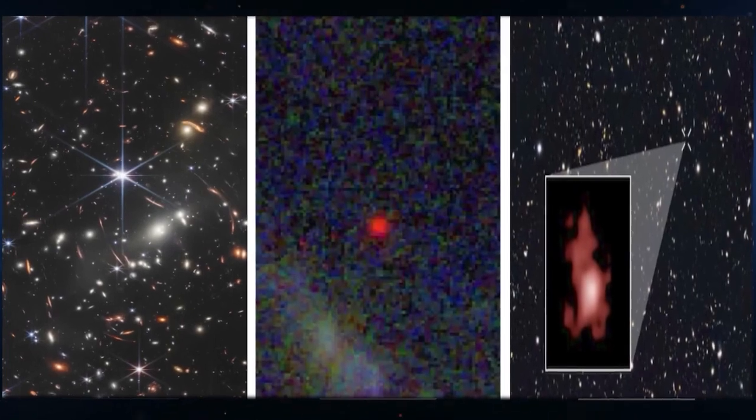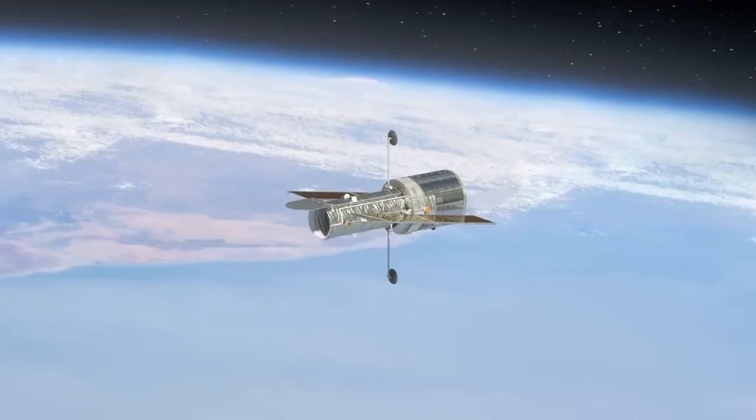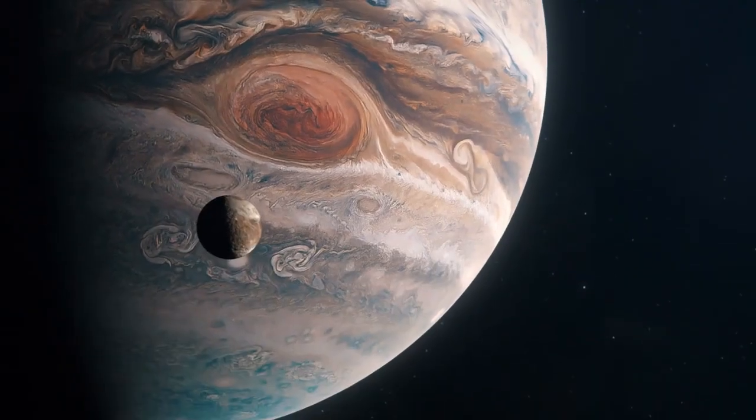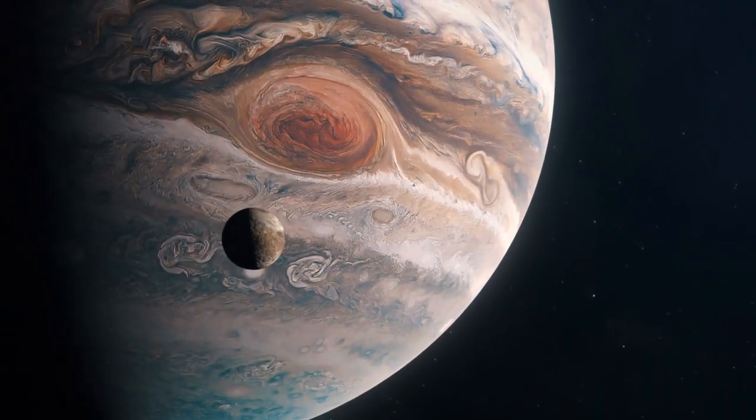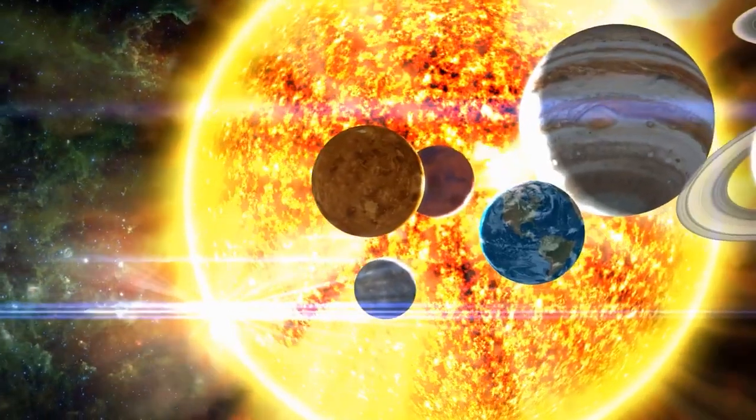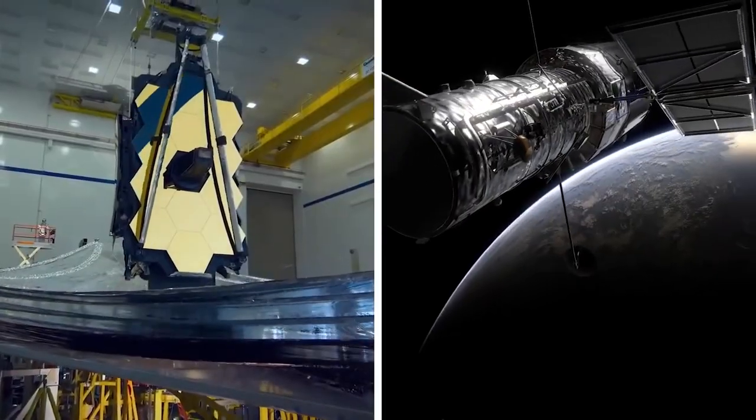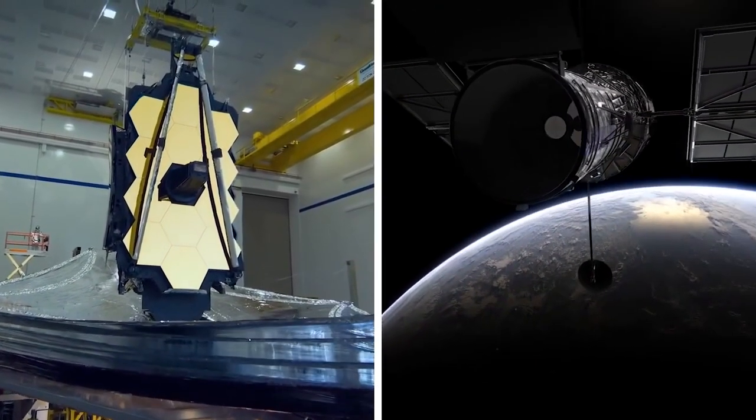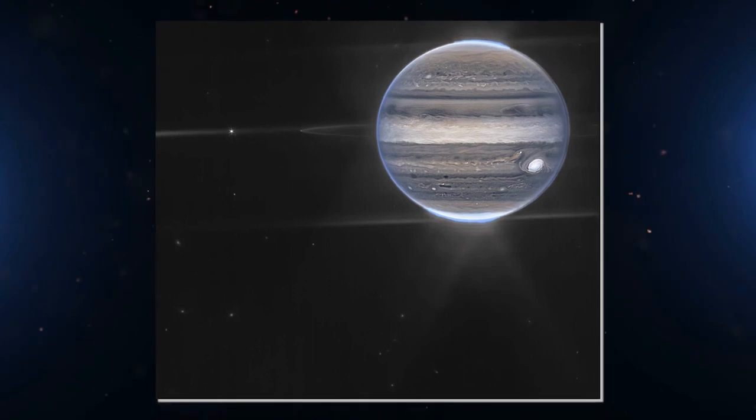Webb provided sharp views of Jupiter's auroras and storms that Hubble can't see. In August of last year, Webb took pictures of Jupiter, the biggest planet in our solar system. Webb's image of the gas giant is clearer and sharper than Hubble's, which you can see on the left in the picture above.